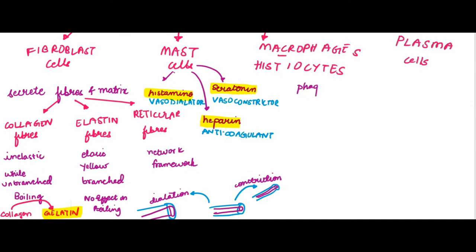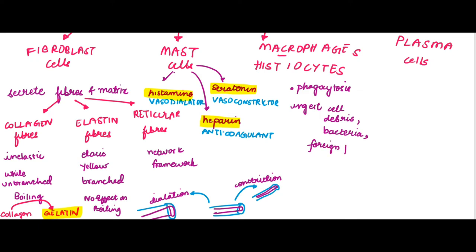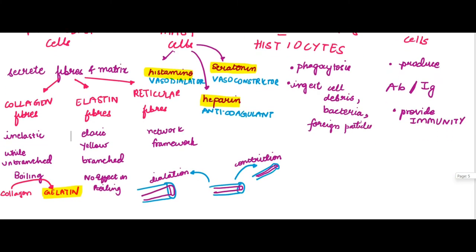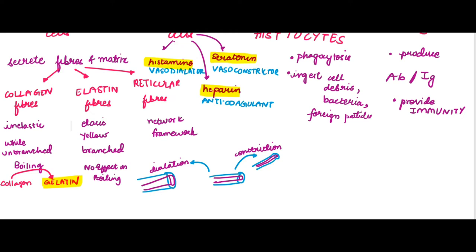Macrophages, otherwise known as histiocytes — 'histio' means tissue, 'cyte' means cell — help in phagocytosis, meaning they ingest cell debris, bacteria, and other foreign particles. The next type of cells is plasma cells. Plasma cells produce antibodies or immunoglobulins, helping in providing immunity to the body. This covers all the different types of cells present in areolar tissue.